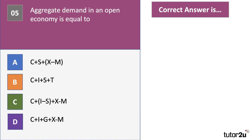Question five: aggregate demand in an open economy is equal to which formula? An open economy is one which is open to trade in goods and services. The correct formula is D — C plus I plus G plus X minus M. The X minus M component is the net trade balance: the value of exports minus the value of imports.